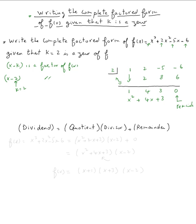In other words, dividend—this is f of x, is my dividend—so the dividend will be f of x equal x cubed plus two x squared minus five x minus six is equal the quotient, x squared plus four x plus three, times the divisor, x minus two, plus remainder is zero. In other words, this is just x squared plus four x plus three times x minus two.